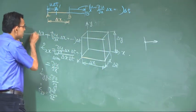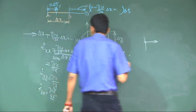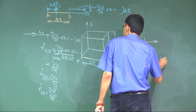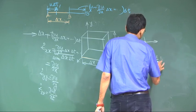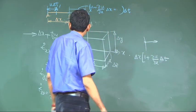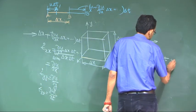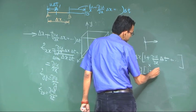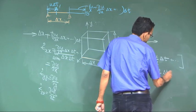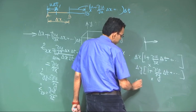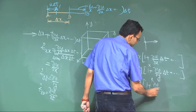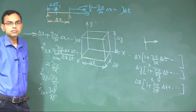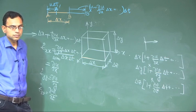New delta x is delta x times 1 plus the strain term. So the new volume is the product of new delta x, new delta y, and new delta z, each expressed as the original dimension multiplied by one plus the respective strain term times delta t.